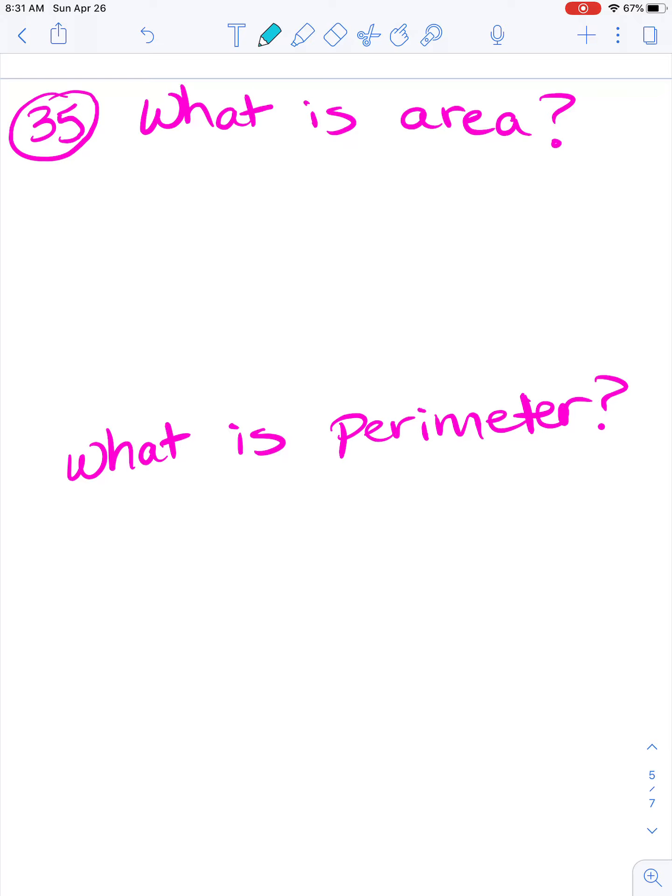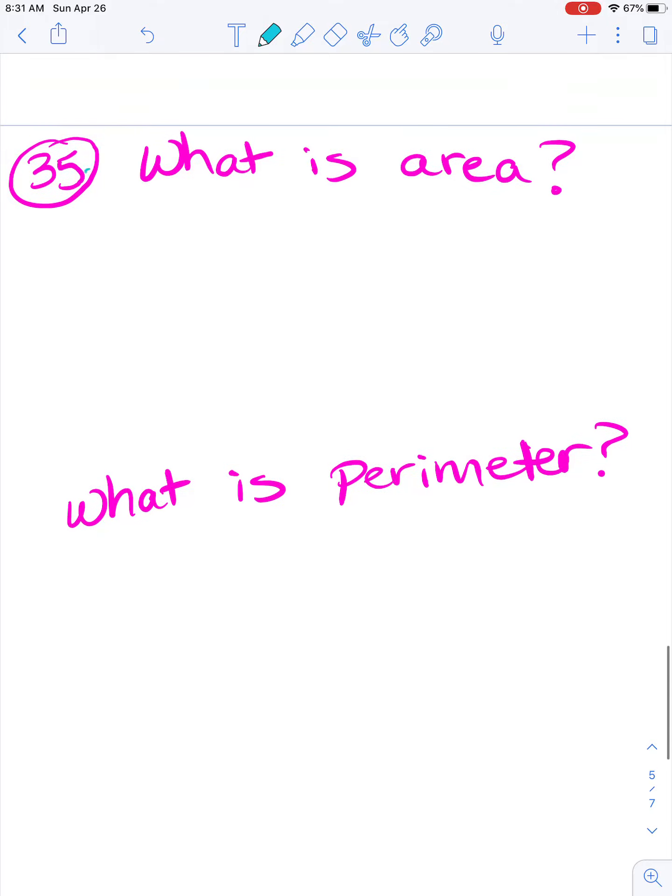So here, what is the area? What is perimeter? Let's sing our area song again. Area is the total space, total space, total space. Area is the total space the shape occupies. Multiply the length times width, length times width, length times width. Multiply the length times width to find the area. So it is the total inside space.